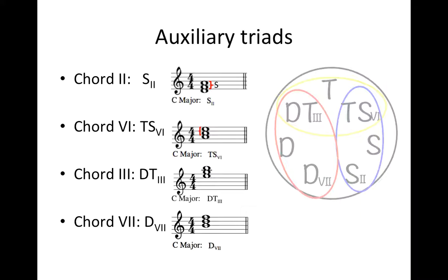Chord 6 has two common notes with the tonic and two common notes with the subdominant. Chord 3 has two common notes with the dominant and two common notes with the tonic. And chord 7 has two common notes with the dominant.